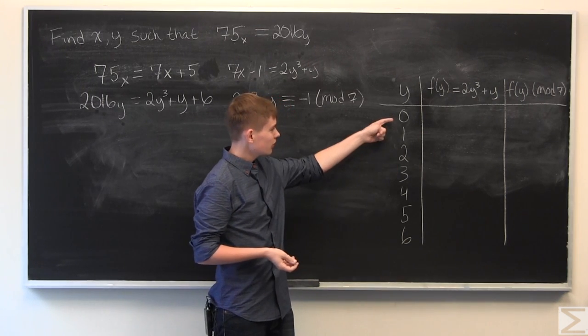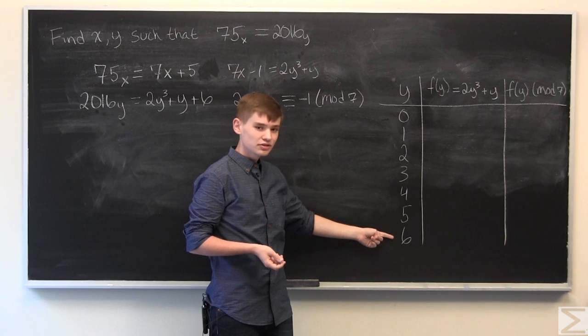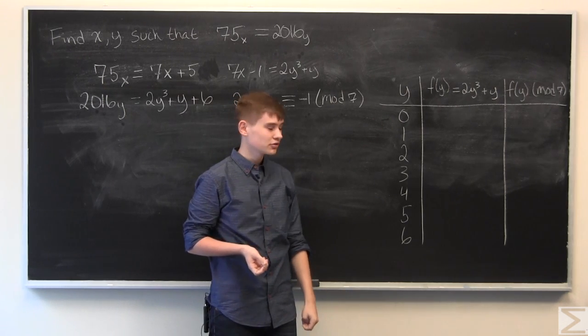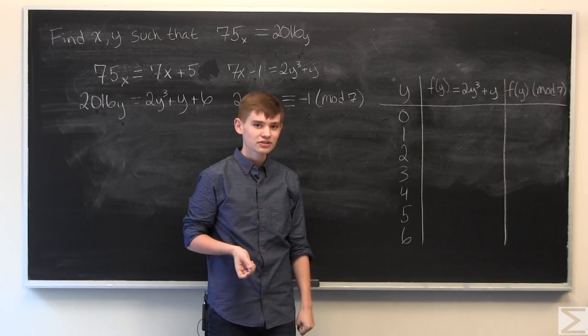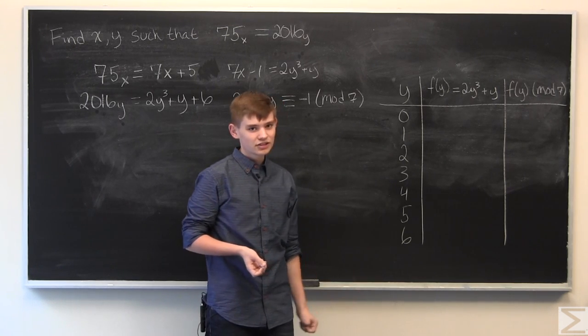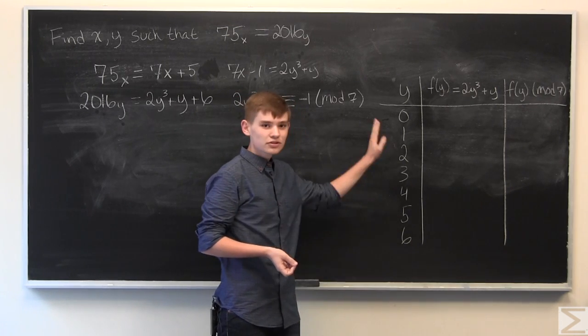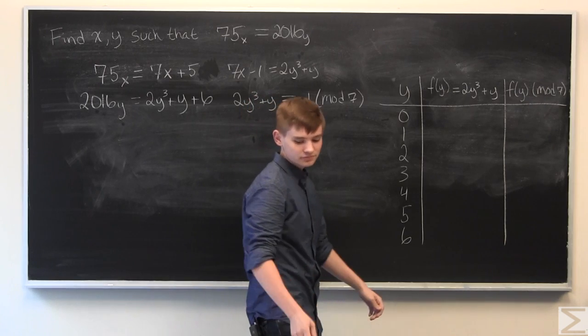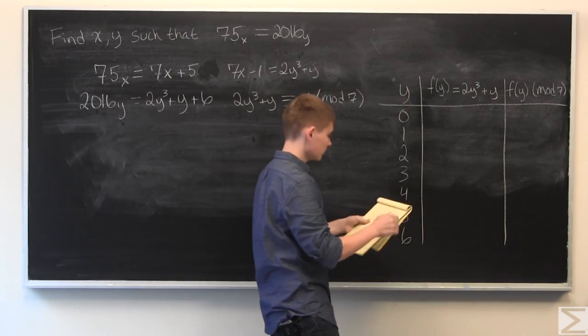If you're wondering why we only have to check values of y from 0 to 6, you can also check the solution transcript where I show explicitly why you only need to check these values. So, I'm going to fill out this chart right now and I'll be back.